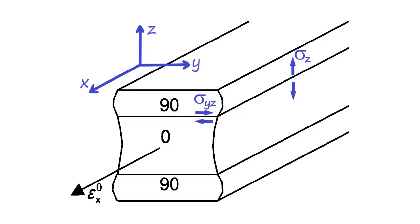In chapter 5, we explore 3D solid modeling of laminated composites. In this example, we calculate the interlaminar stresses σZ and σYZ. These cannot be calculated by lamination theory or by shell elements.